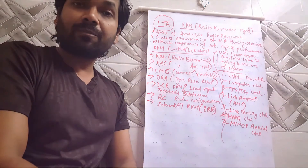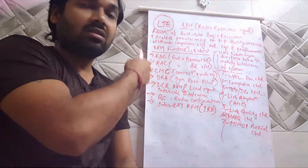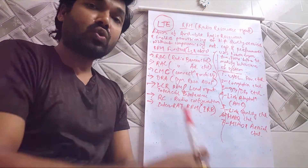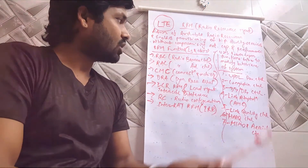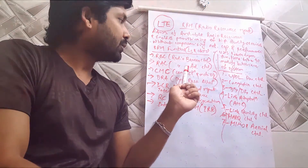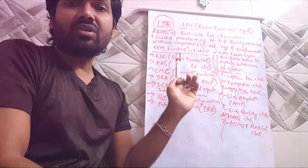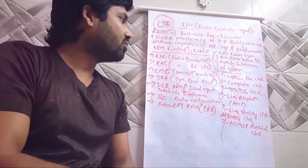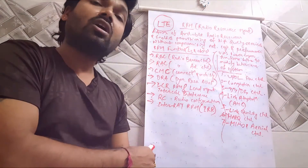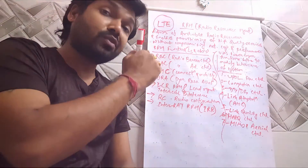The second function is Radio Admission Control — the admission of new UEs into the network, or admission of any new user into the network, without compromising the current capacity and performance of the network.